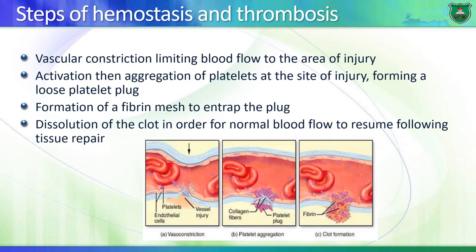These are the basic steps. First, a physiological effect: vascular constriction limits blood flow to the area of injury. This is followed by a chemical process - cellular and biochemical. You have activation of platelets and their aggregation at the site of injury, forming a platelet plug. This platelet plug is loose and becomes solidified into a hard clot via the formation of a fibrin mesh - a network of fibers surrounding and entrapping the platelet cells. This is followed by dissolution of the clot enzymatically.